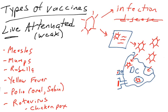So measles, mumps, rubella, yellow fever, one version of the polio vaccine, which we'll talk about in a later video, is a live vaccine. That is the oral Sabin vaccine. Rotavirus, which is a fairly recent vaccine, as well as chickenpox. All of these vaccines are based on live attenuated viruses.